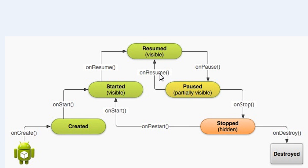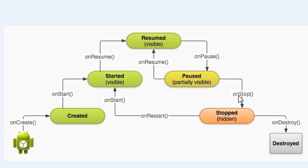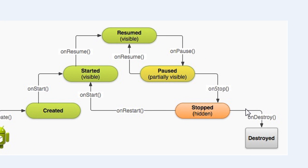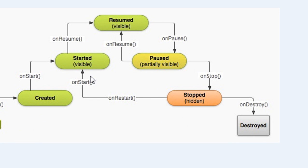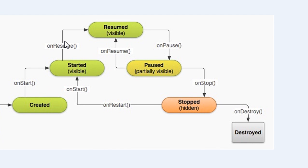If a user closes the activity, first it will call the onPause method, then it will call the onStop method, and only after that the activity is hidden from the user. Finally the system will call the onDestroy method and the activity is completely removed from the system. If an activity is stopped but not destroyed, we can restart it by calling the onRestart method, after which it calls onStart and is again visible to the user.